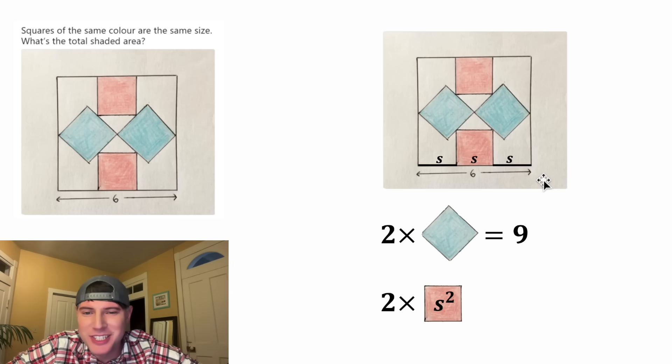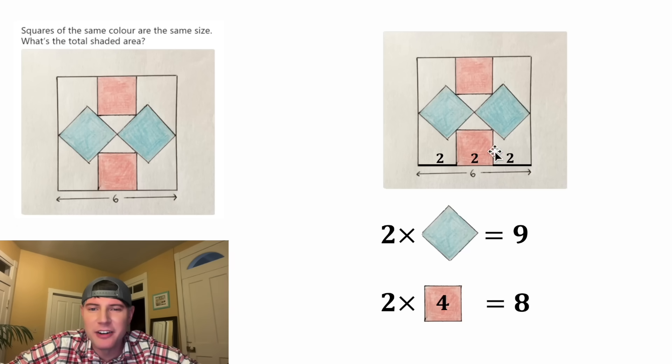And now this base of six is the same thing as three S's. That means each of these S's are equal to two. And we can do a substitution down here. In the place of this S, we can plug in two. Two squared is equal to four. And two times four is equal to eight. So the area of these two red squares is equal to eight.